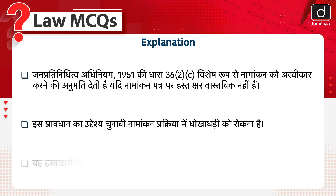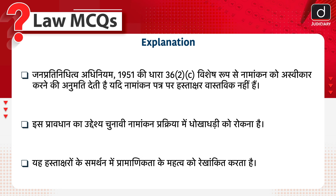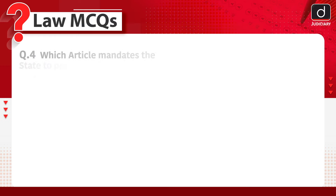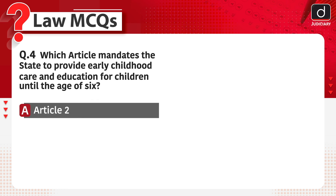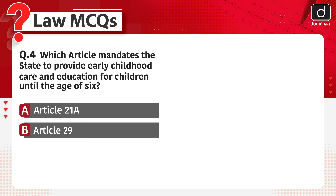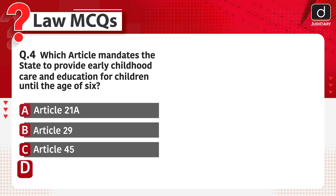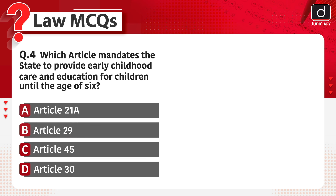Next question: which article mandates the state to provide early childhood care and education for children until the age of six? Options: Article 21A, Article 29, Article 45, or Article 30.